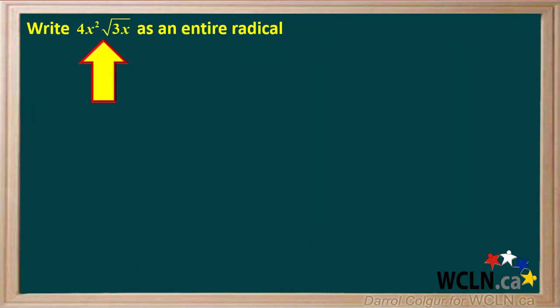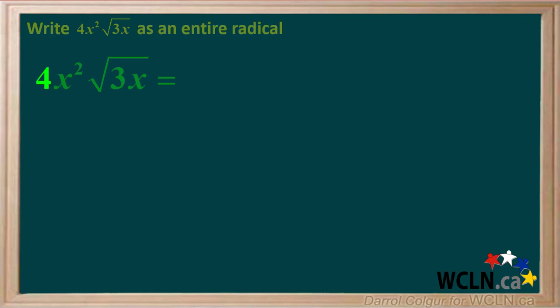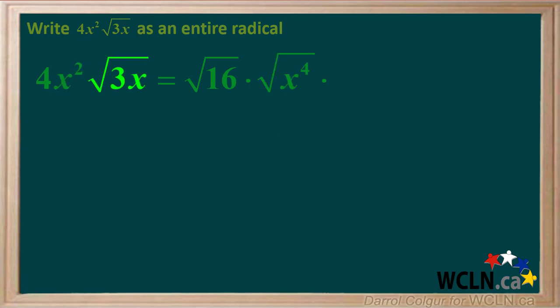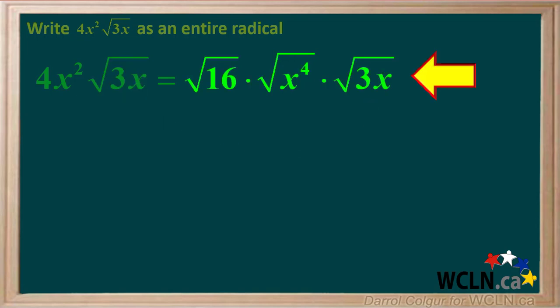We're asked to write the mixed radical 4x squared times the square root of 3x as an entire radical. 4 squared is 16, so we can write 4 as the square root of 16. Squaring x squared gives us x to the 4th, so we write x squared as the square root of x to the 4th. The square root of 3x is already a radical, so we write it here as is. We now have the square root of 16 times the square root of x to the 4th times the square root of 3x.